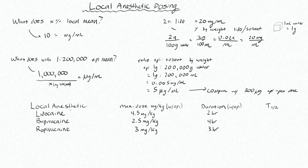The max dose of common local anesthetics is something you should commit to memory. For lidocaine it's 4.5, or some say five milligrams per kilogram. With epi added, vasoconstriction slows uptake into the bloodstream, so you can go up to seven milligrams per kilogram. For bupivacaine the max is 2.5, or three milligrams per kilogram with epi. For ropivacaine the max is three milligrams per kilogram.